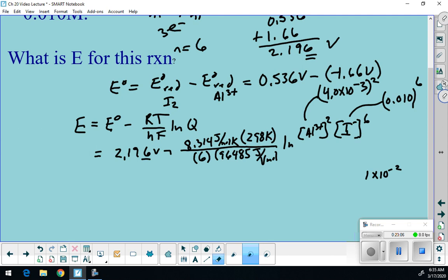Take the natural log of that. I get a negative 38-something, right? Times 298 times 8.314 divided by 6 divided by 96485. And I get a negative 0.1655. So I'm going to take 2.196 minus my answer. And I get 2.36 volts.